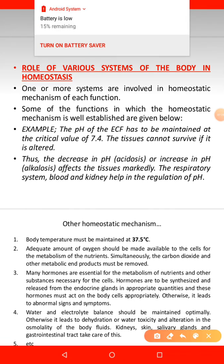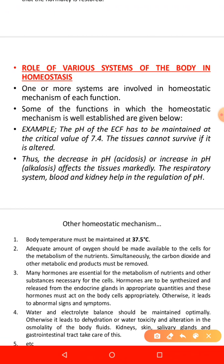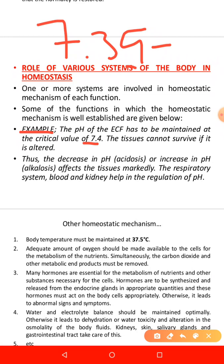All systems of the body play a role in homeostasis: the digestive system, endocrine system, musculoskeletal system, and renal system are all involved in maintaining a constant internal environment. For example, the pH of the extracellular fluid must be maintained at a normal value of 7.35 to 7.45. When there is a high or low pH, tissues cannot survive. Systems such as the respiratory system, blood, and kidneys come in to regulate this pH.